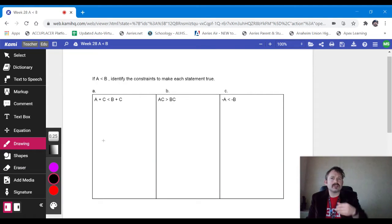All right, guys. So we're going to talk about, this is week 27, block day two, the last three questions. If A is greater than B, identify the constraints to make each statement true.